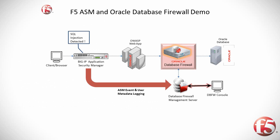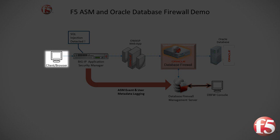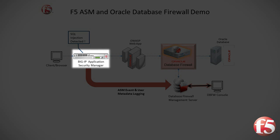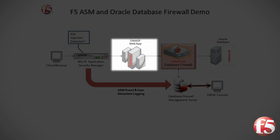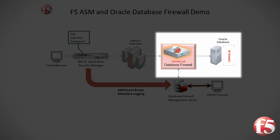First, a little background on the demo itself. Here is a simplified diagram of our demo web application and database environment. From left to right, we have a standard client using a web browser, then a Big IP from F5 running the Application Security Manager web firewall software, and then an Oracle WebLogic server hosting the OWASP insecure web application. Next is the Oracle Database Firewall running on a dedicated Oracle Enterprise Linux server, protecting the Oracle Database.